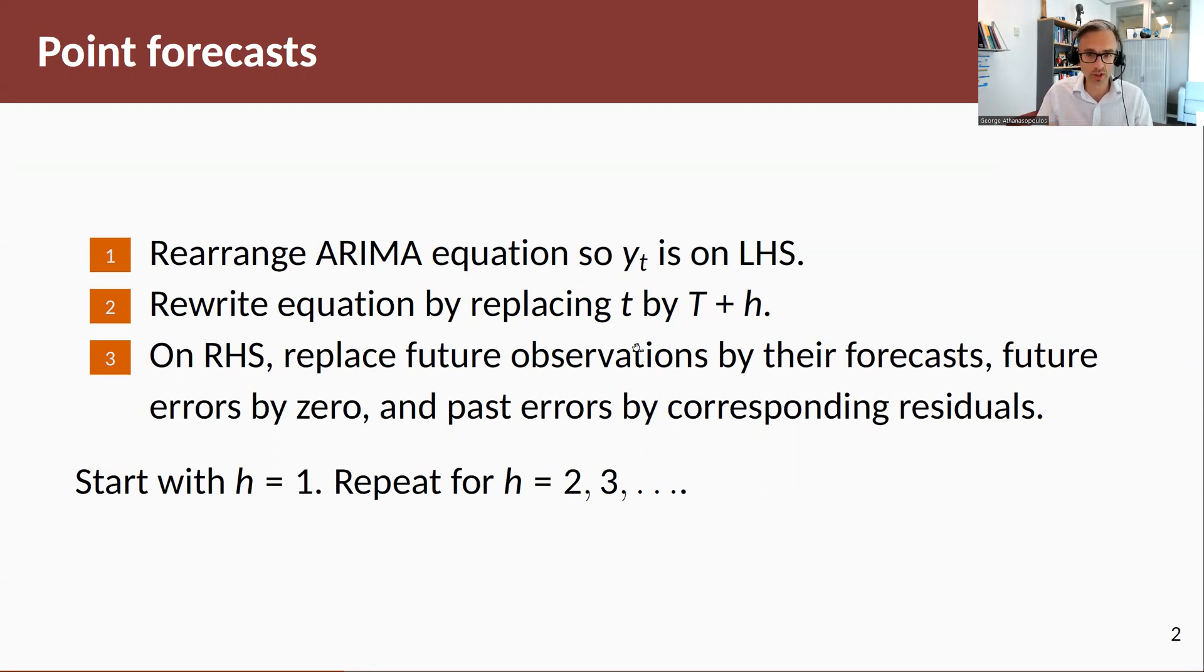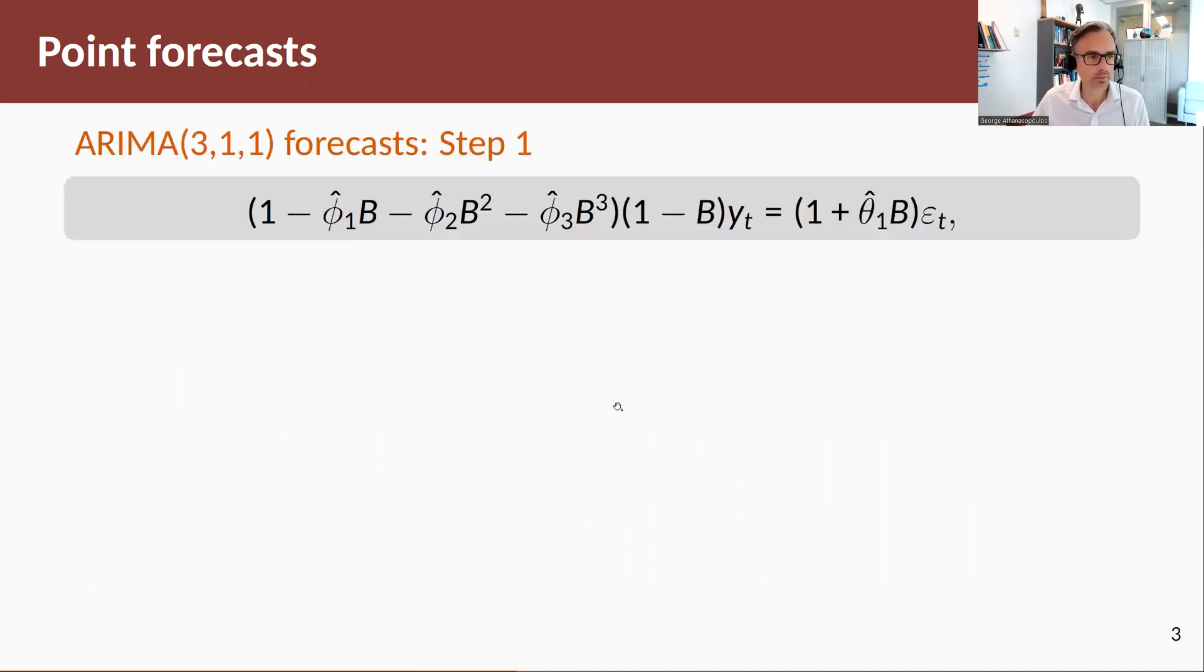Then on the right-hand side, you replace future observations by the forecasts for multiple steps ahead. So if you did h equals t plus 2, then on the right-hand side you would have y t plus 1, so you would replace that by its forecast. You replace future errors by zero and you replace past errors by the corresponding residuals. To make this process fairly implementable, you start with h equals 1 and you repeat, so it's an iterative process.